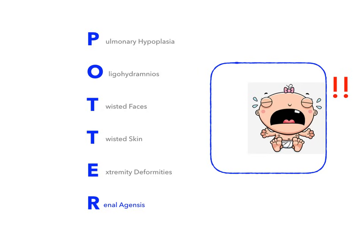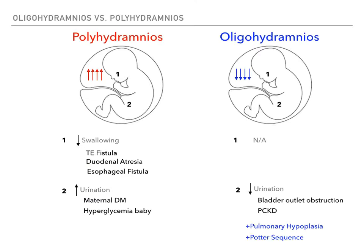That is the Potter sequence - a very high yield association with oligohydramnios. Understanding this pathophysiology gives you everything you need to know about oligohydramnios and, by contrast, polyhydramnios. This has been oligohydramnios versus polyhydramnios, brought to you by Dirty USMLE.